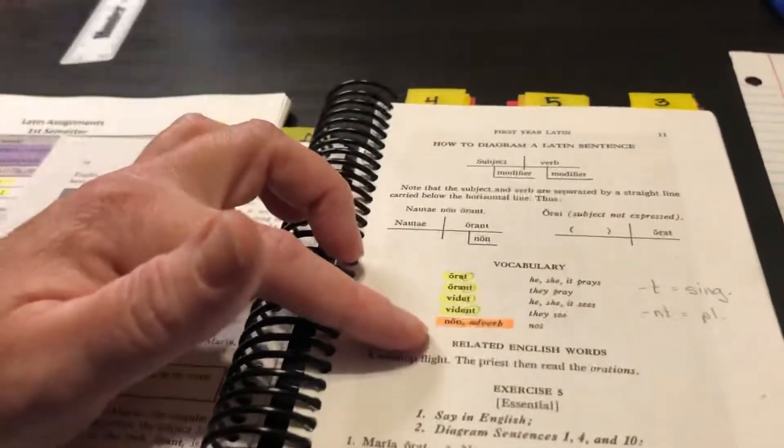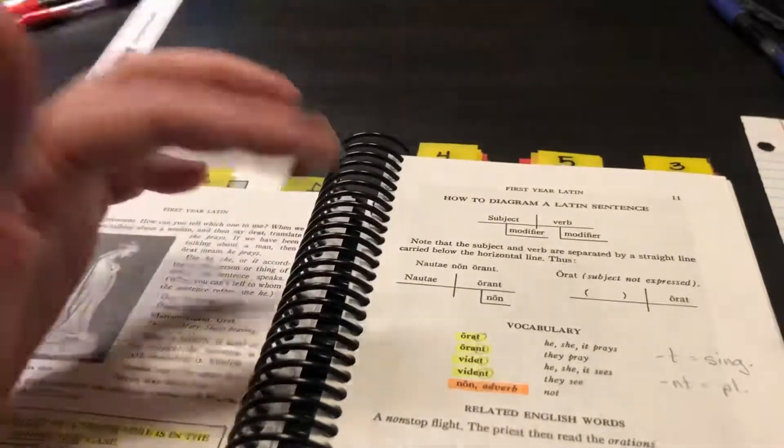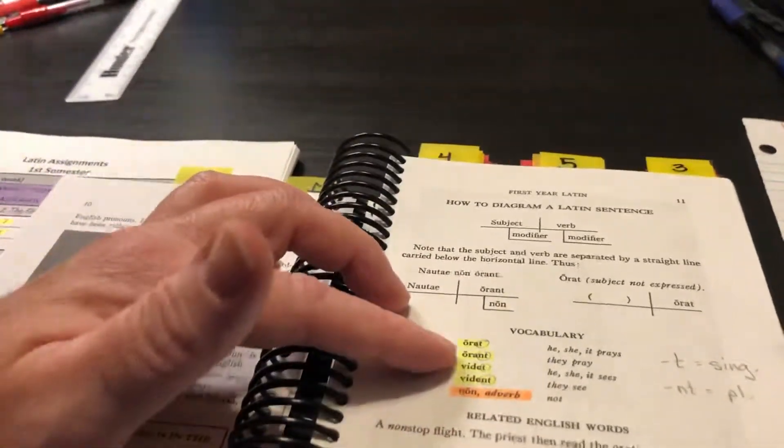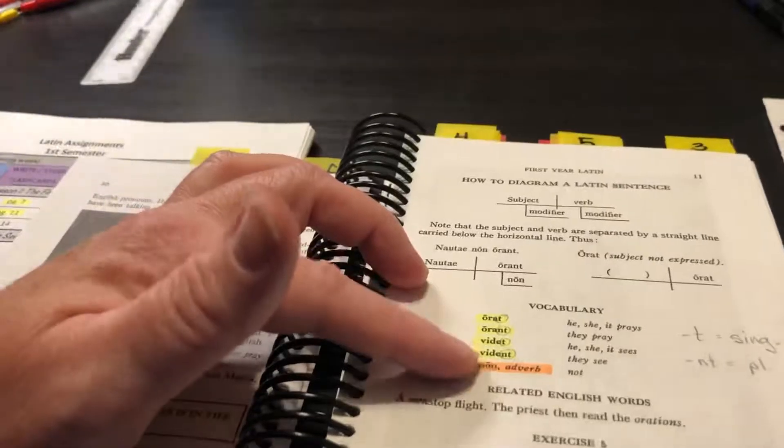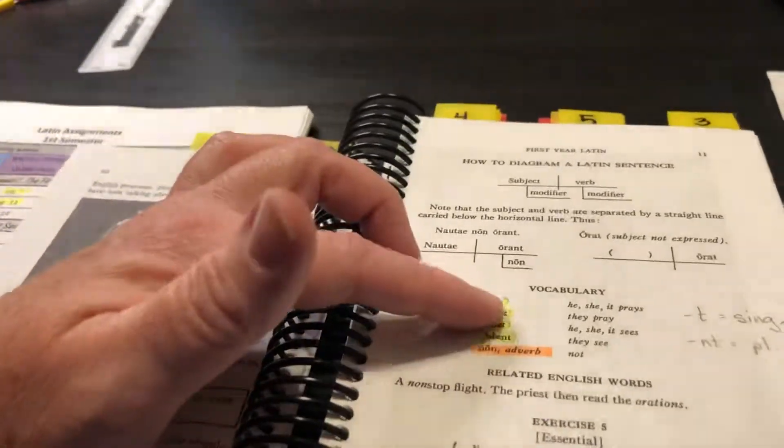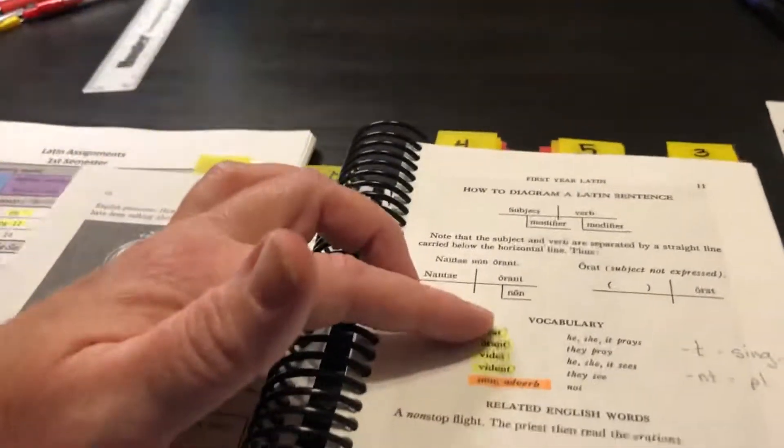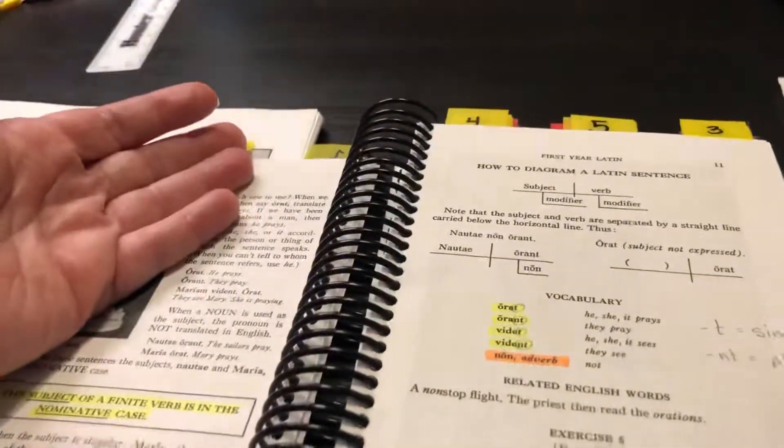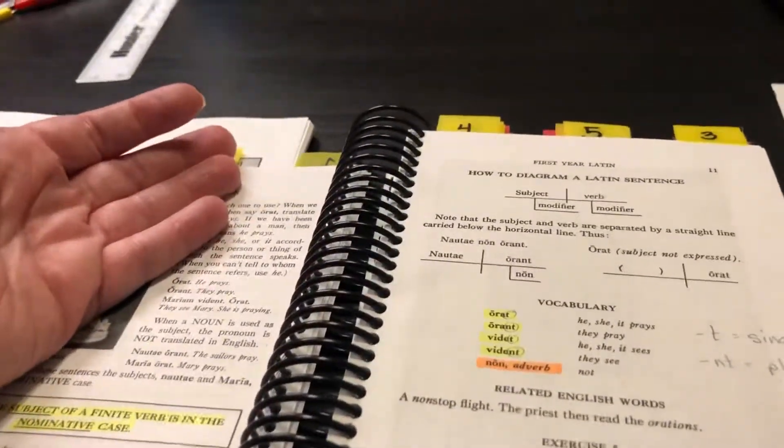And eventually somebody recognizes that, you know, two are the same in the front, these two are the same in the front, but they have different endings. There's a T and there's an NT. I'm trying to get them to come to these observations on their own without me just telling them.